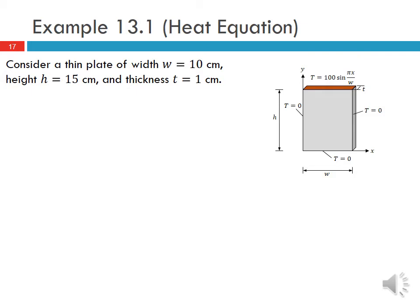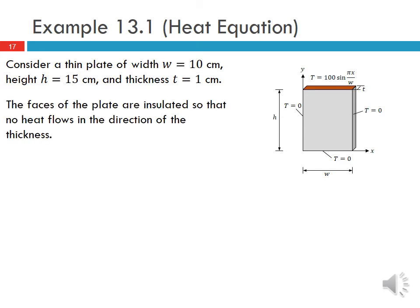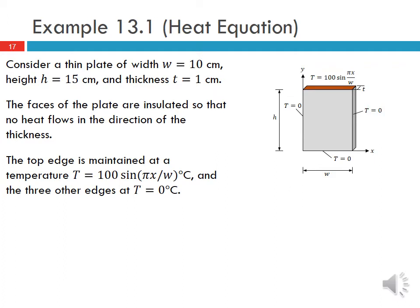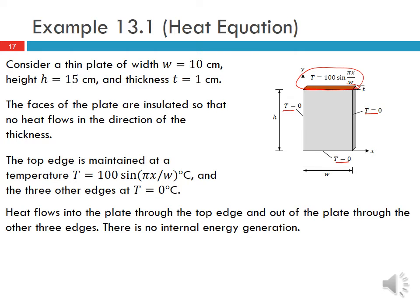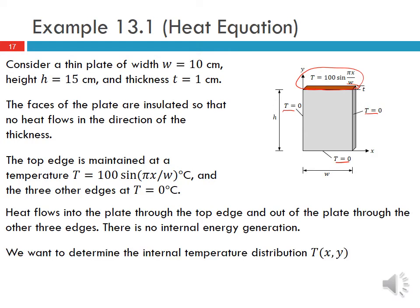Let's look at an example. Consider a thin plate of width W = 10 cm, height H = 15 cm, and thickness t = 1 cm. The faces of the plate are insulated so that no heat flows in the direction of the thickness. The top edge is maintained at a temperature T = 100 sin(pi*x/W) degrees C, and the three other edges are maintained at T = 0.